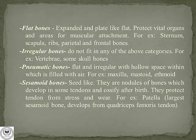Pneumatic bones are flat and irregular with hollow spaces within, which are filled with air. Some of the bones in our face and skull are very hollow and contain air-filled spaces. Examples include the maxilla, mastoid bone, and the ethmoid bone of the skull.